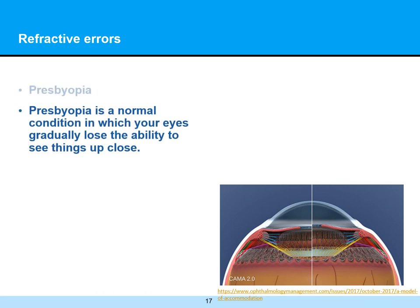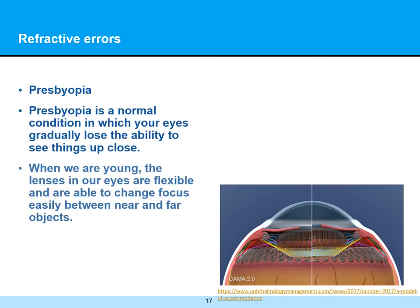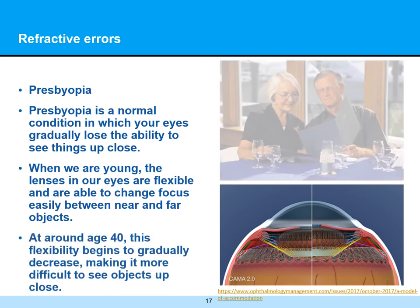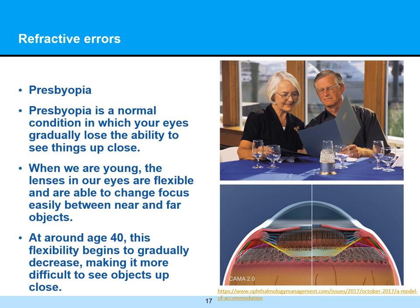With presbyopia, this is a normal condition in which the eyes gradually lose the ability to see things up close. When we're young, the lenses of our eyes are flexible and able to change focus easily between near and far objects. Around age 40 — this will vary between people — this flexibility gradually begins to decrease, making it more difficult to see objects up close. Therefore, many people will wear reading glasses. People who are nearsighted can see close just fine, so you'll often see them take their glasses off and read with their uncorrected eye.